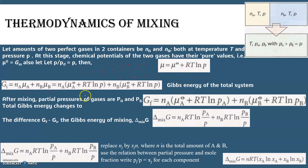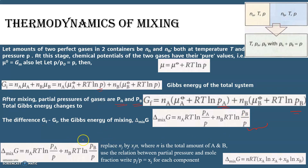This gives the Gibbs free energy of the total system before mixing. After mixing, the pressures become partial pressures Pₐ and P_b, so we replace P with Pₐ and P_b. The difference G_final − G_initial gives ΔG_mix = nₐ RT ln(Pₐ/P) + n_b RT ln(P_b/P).